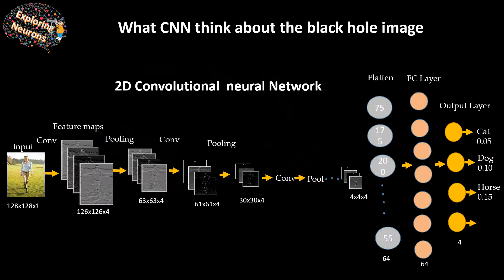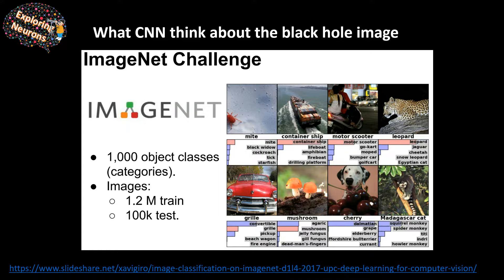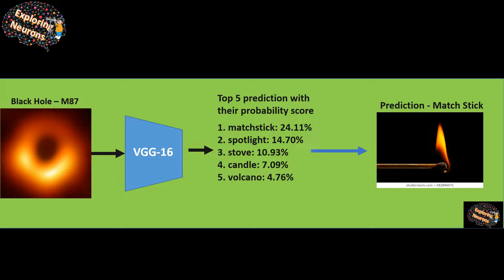Now let's get started with the AI part. This is a convolutional neural network — it takes an input image through different layers of understanding and then classifies it as a human being, a cat, a dog, or any such object. These algorithms are very powerful; they've been trained on 1.2 million images and can recognize almost a thousand real-world object classes. I wanted to feed this black hole image in and see what these algorithms predict.